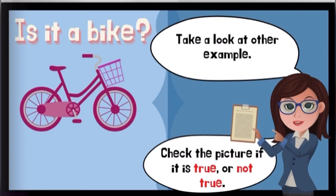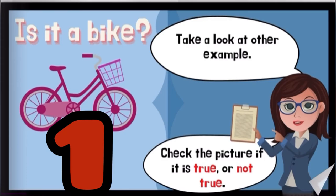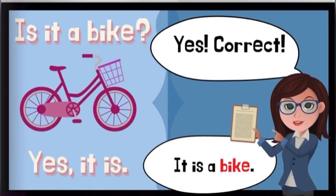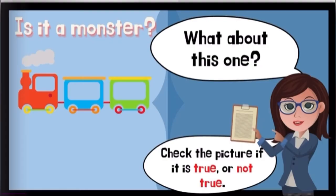Take a look at another example. Check the picture if it is true or not true. Is it a bike? Yes, correct. It is a bike. Yes, it is.